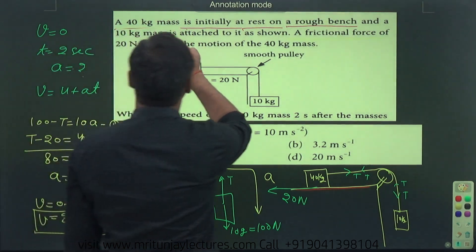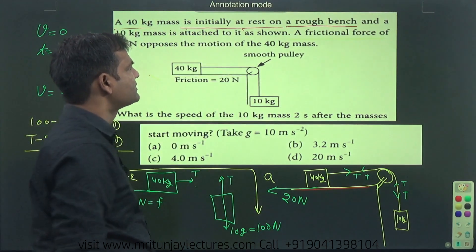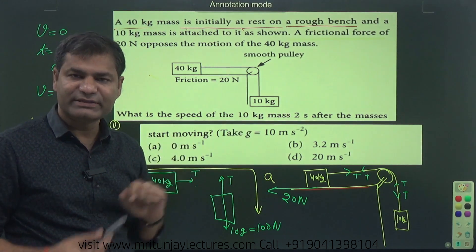A 40 kg mass is initially at rest. Initially at rest means the initial velocity of that mass is 0.